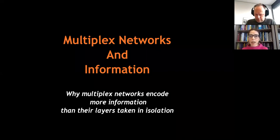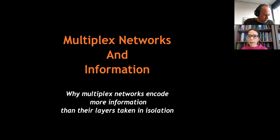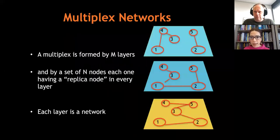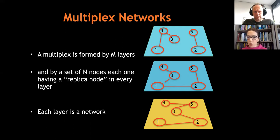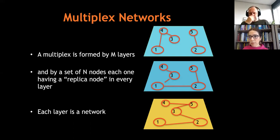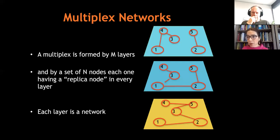The first message I want to convey is that multiplex networks really encode more information than single layers. A multiplex network is a multi-layer network with a more simple, more constrained structure. It is formed by M layers, and each node has a replica node in every layer. For instance, one layer can be email communication between people, another layer can be mobile phone, and another can be chat. A person — node i, say John Smith — can transmit via email, mobile phone, or chat. Or in online social networks you can have a Facebook ID and a LinkedIn ID corresponding to the same node.